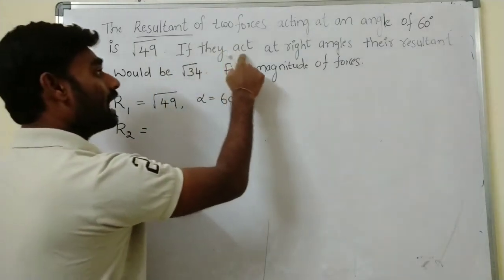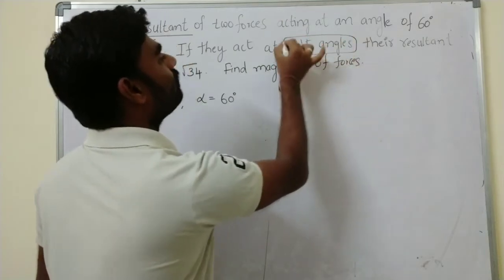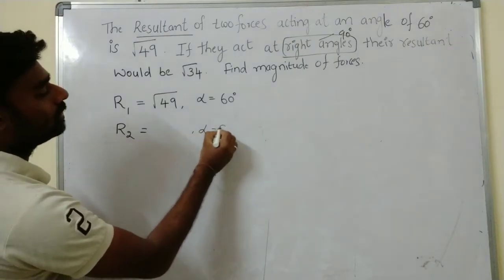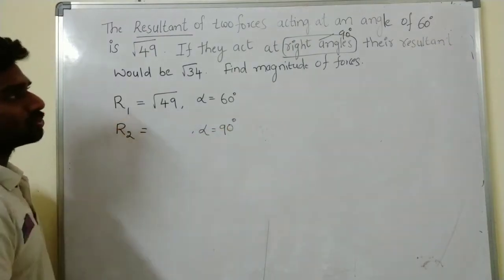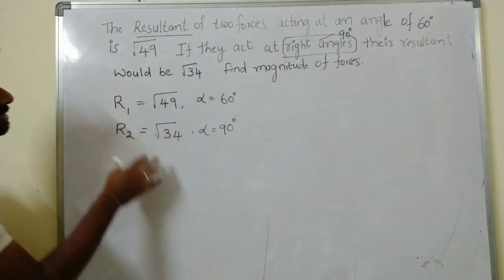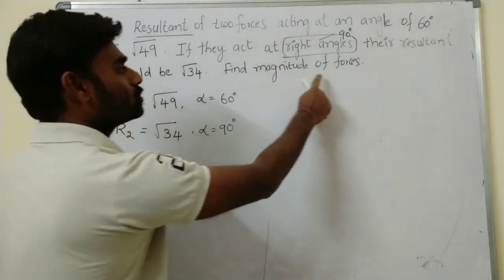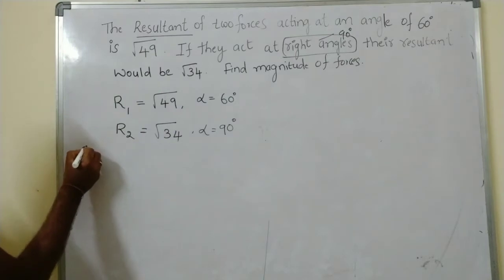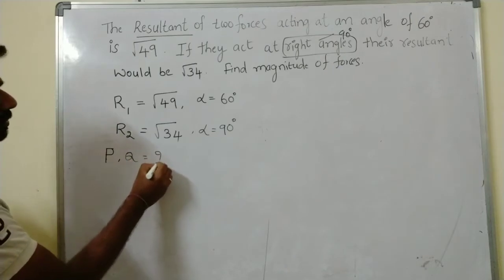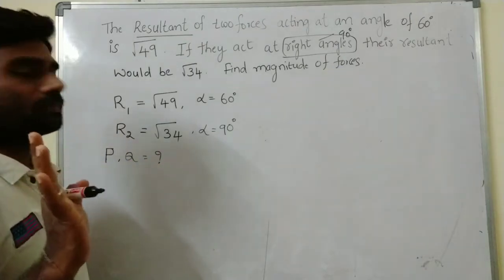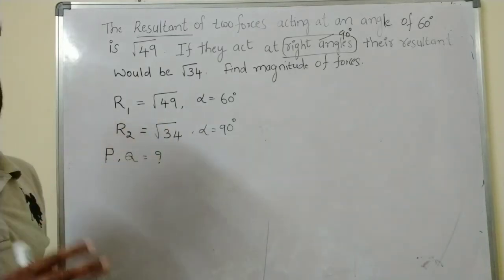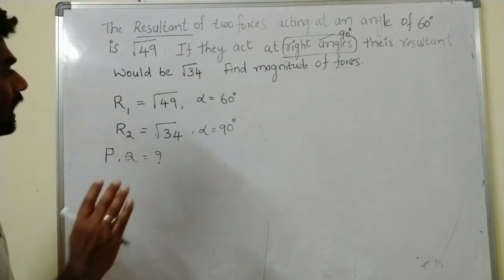Next, if they act at right angles — right angles means 90 degrees — so alpha = 90° is given. This is case two. Their resultant is √34. Find magnitude of forces means you need to calculate P and Q, or F1 and F2.